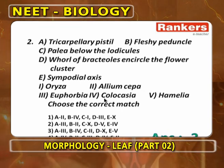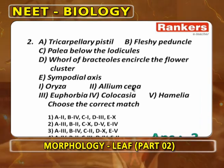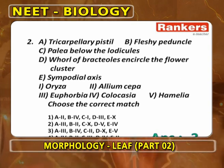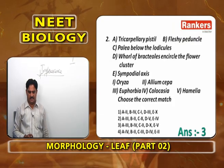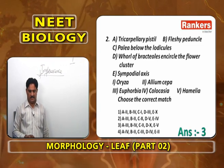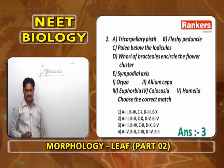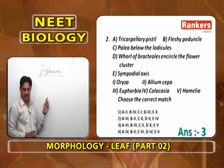Palea below the lodicules (C) is found in Allium — Allium cepa. Then D, whorl of brachyoles ringing the flower cluster, is found in Helianthus and Allium cepa. Sympodial axis is found in Helianthus, because in Helianthus the inflorescence is monocasial helicoid cyme. In monocasial helicoid cyme, flowers are produced in a spiral manner opposite to the bracts, so it is a pseudo axis.